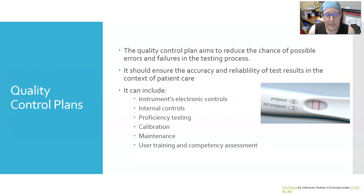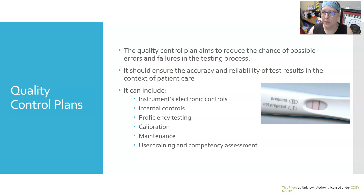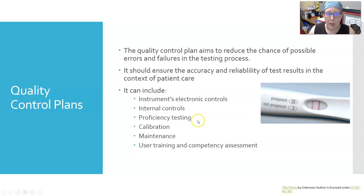Quality control plans aim to reduce the chance of possible errors and failures in the testing process. They should ensure the accuracy and reliability of test results in the context of patient care. A QC plan can include an instrument's electronic controls, internal controls — which are usually built into the test. For example, a pregnancy test where two lines means pregnant, one line means non-pregnant, and that one line is the internal quality control. If you have no lines, it's an invalid test. QC plans can also include proficiency testing, calibration, maintenance, and user training and competency assessment.